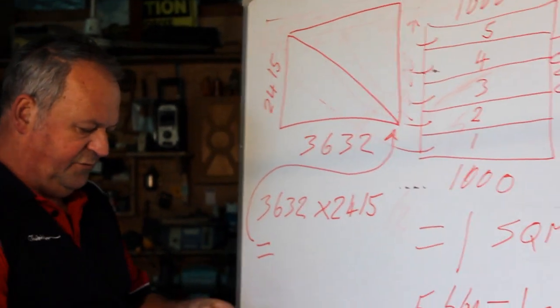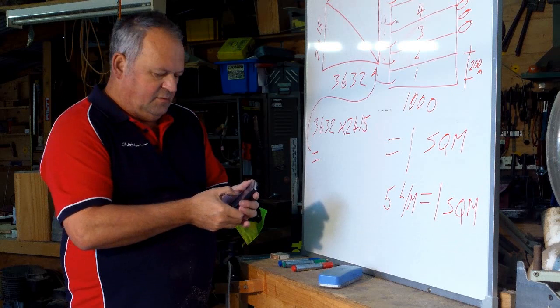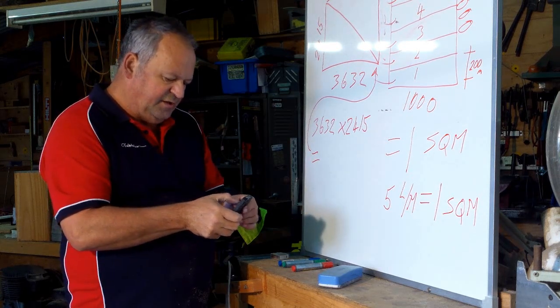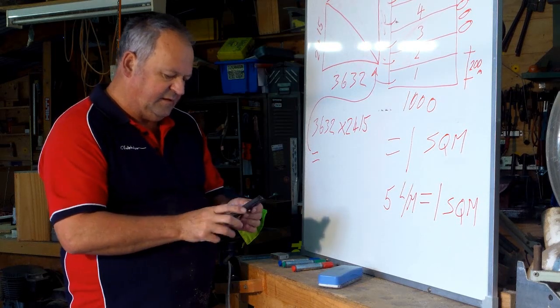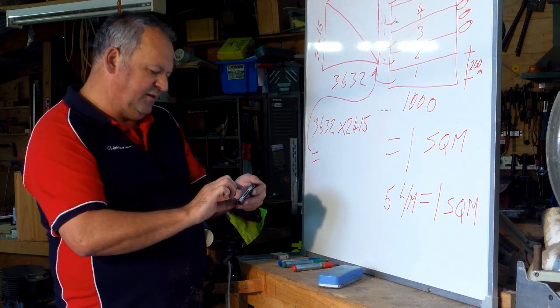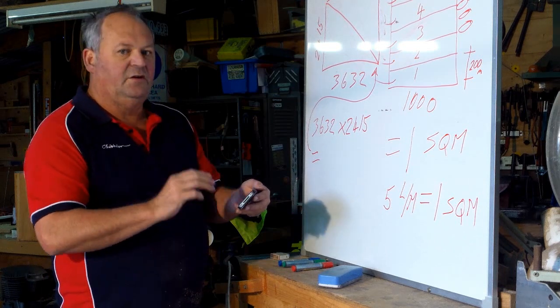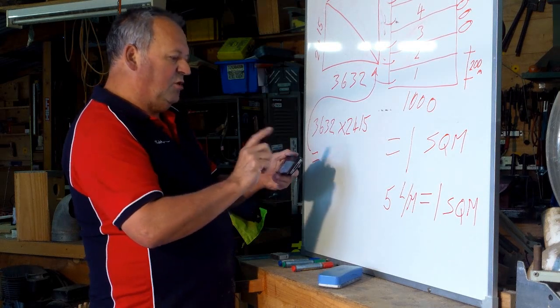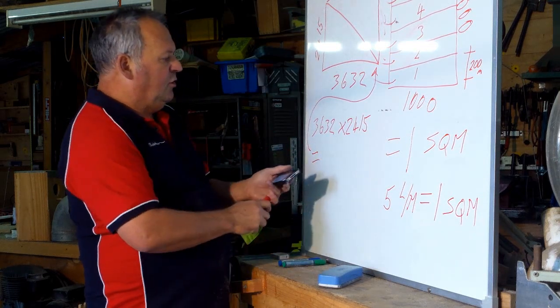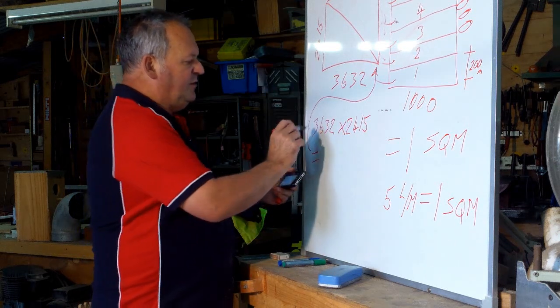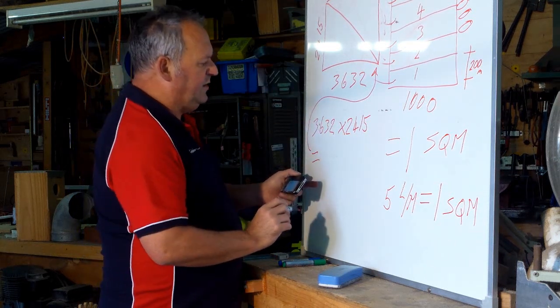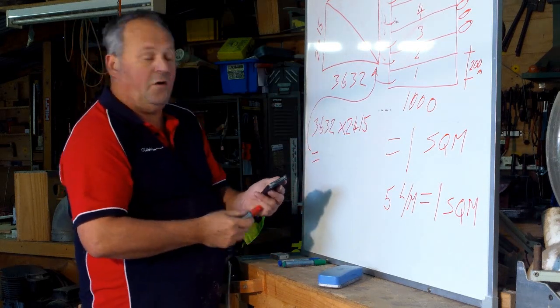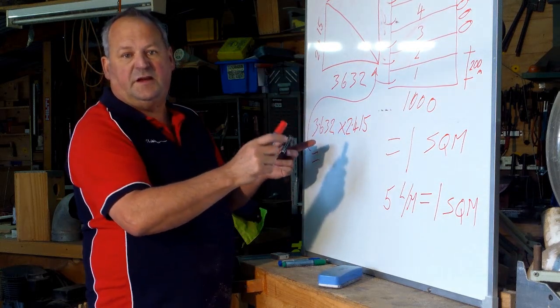The most useful thing that you have. Get to the calculator, which you should be using all the time. Now, with the calculator, I always hit clear. Always. So there's nothing stored in there. I need to work in square metres. So, instead of it being 3,632, I'm going to now go 3.632 by 2.415.